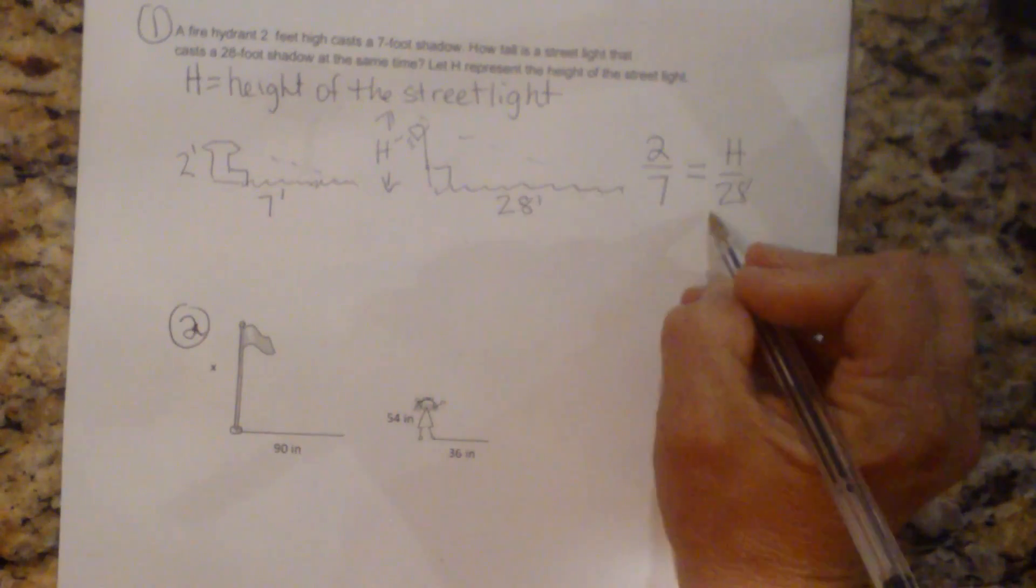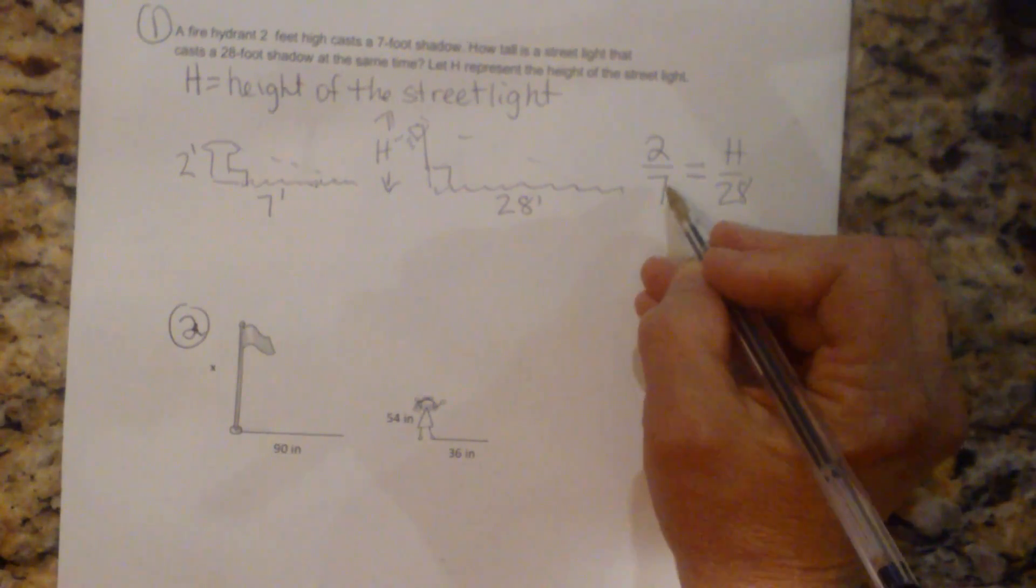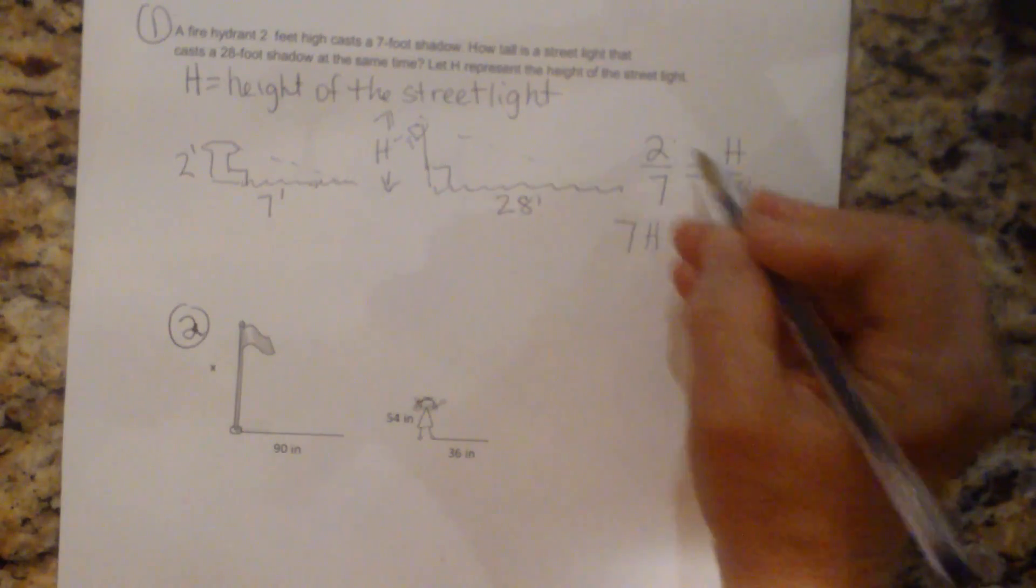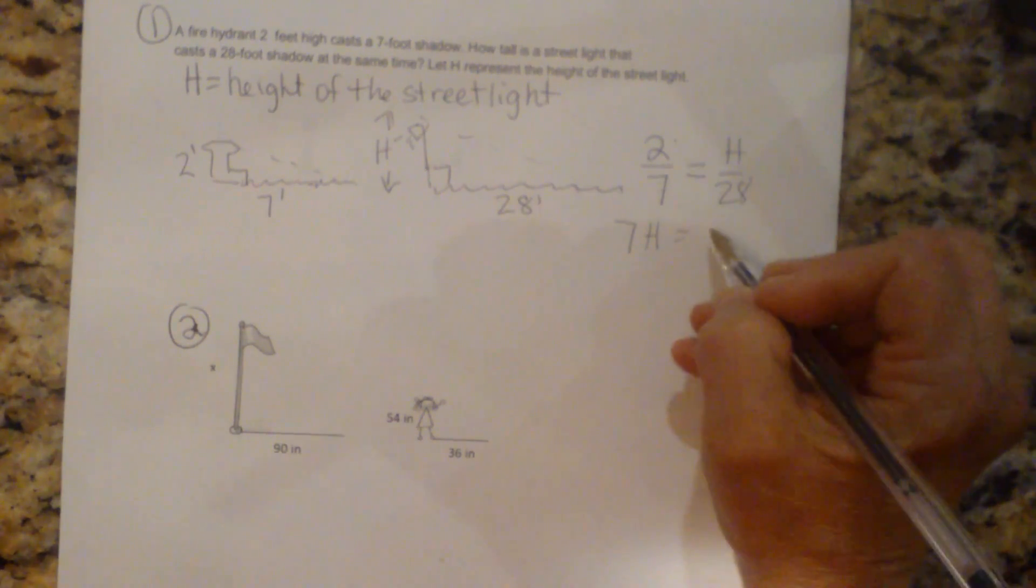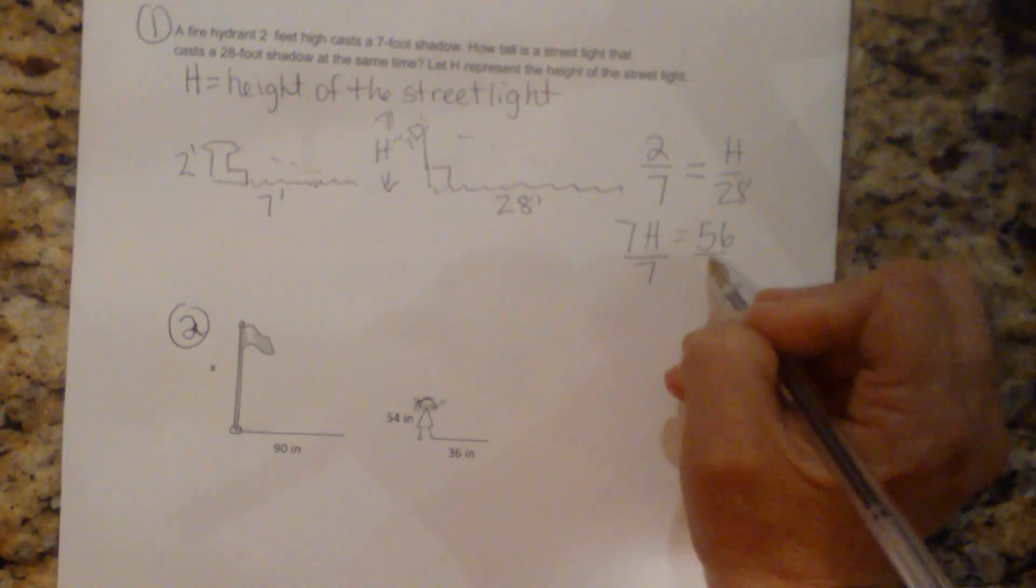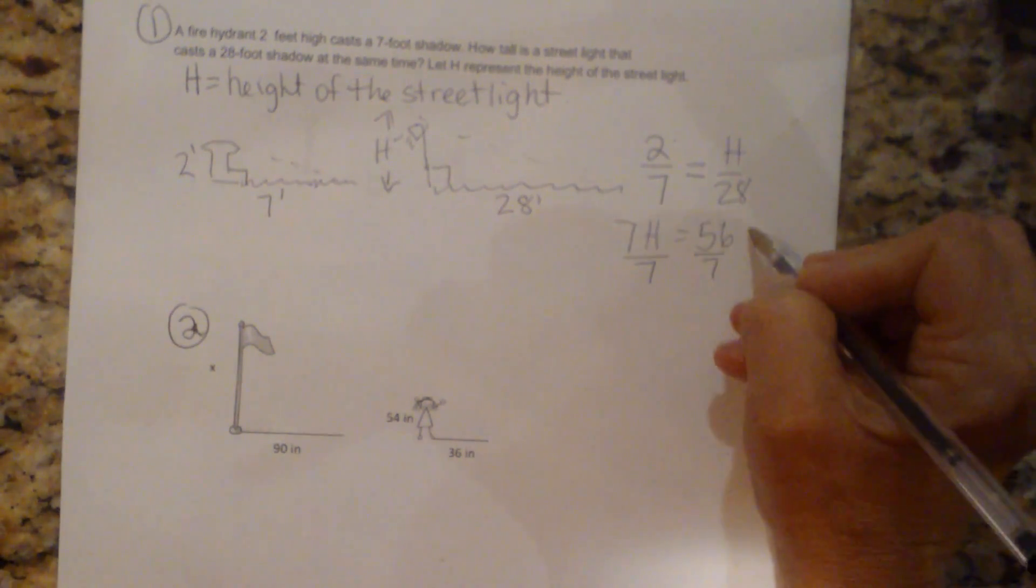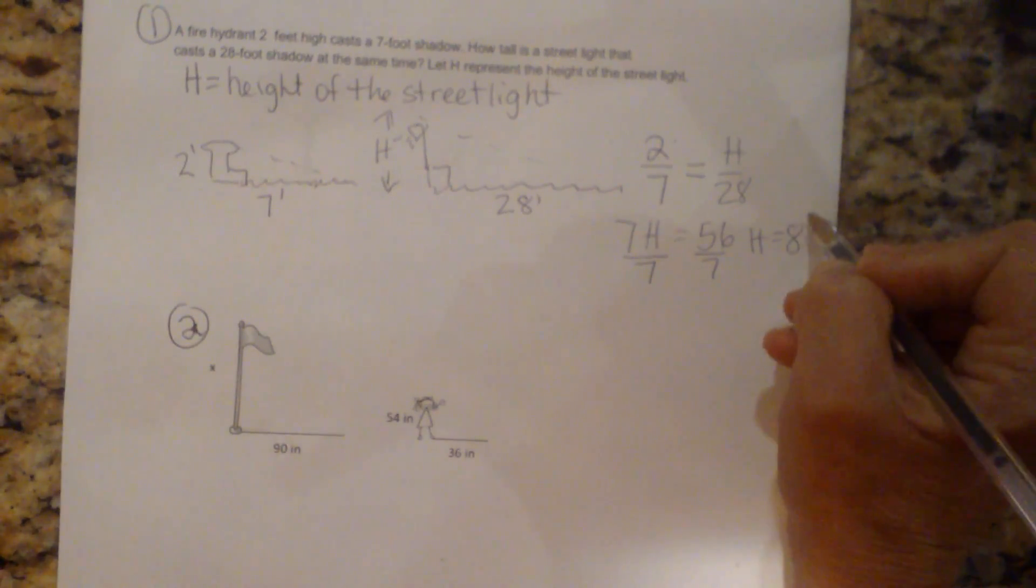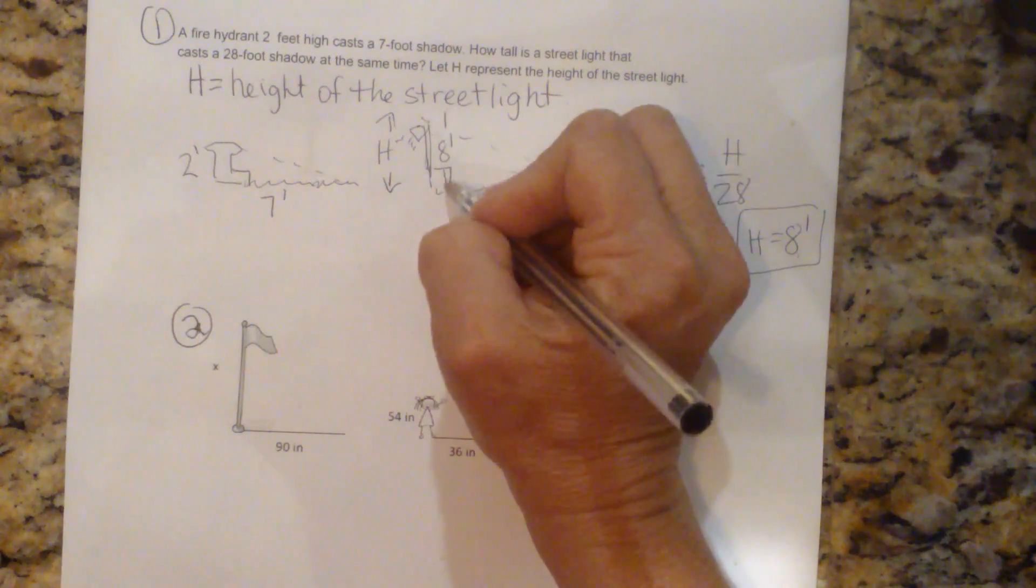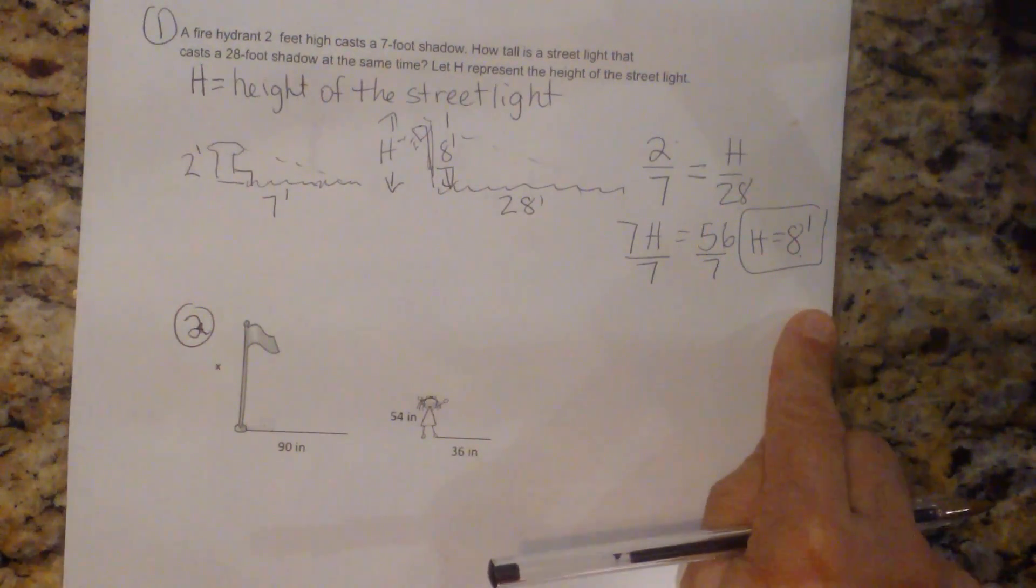And now we can do cross products to solve it. So seven times h is seven h. Two times 28 is 56. And then we're going to divide both sides by seven. And so the height is equal to eight feet. So the street light must be eight feet tall. And that's how you find that value.